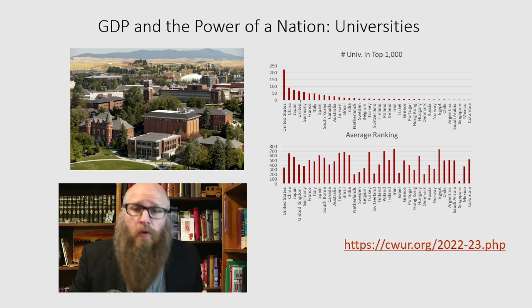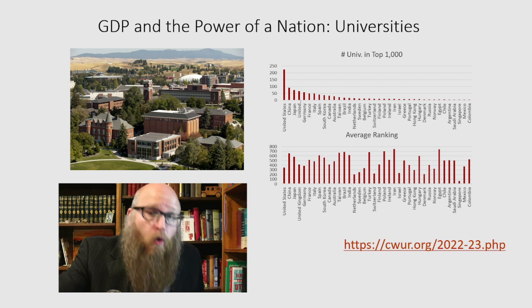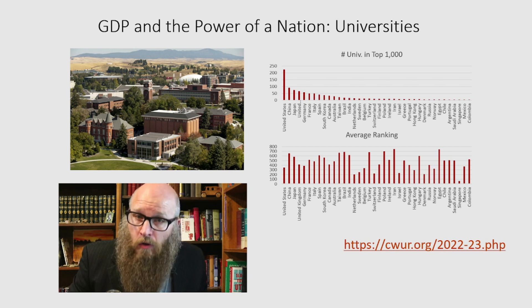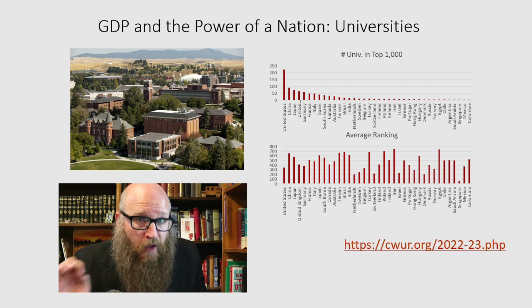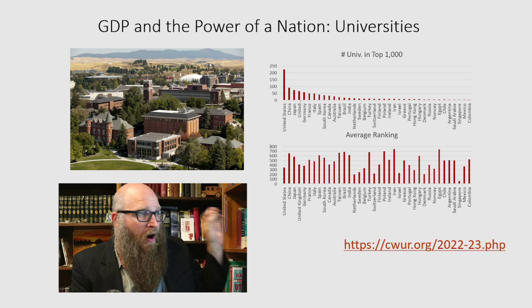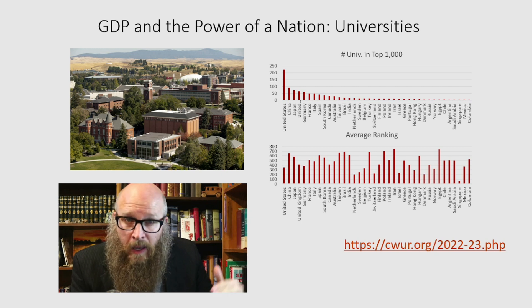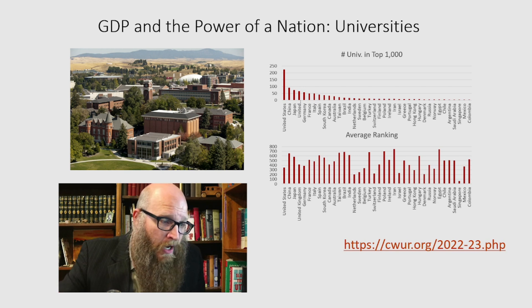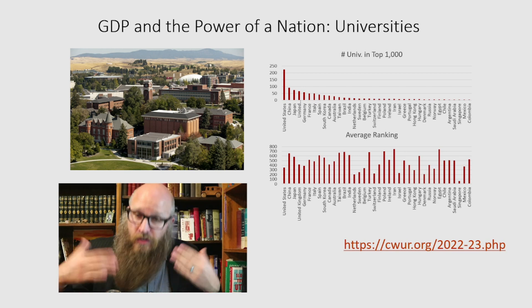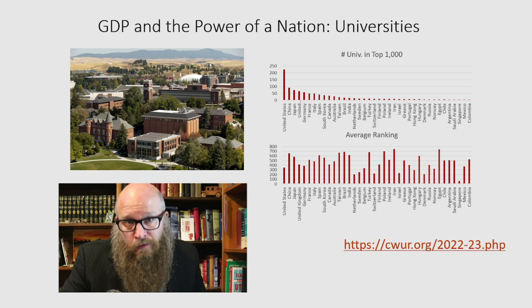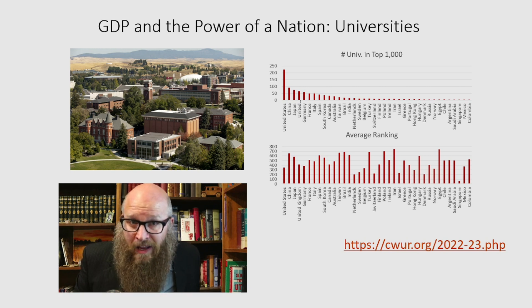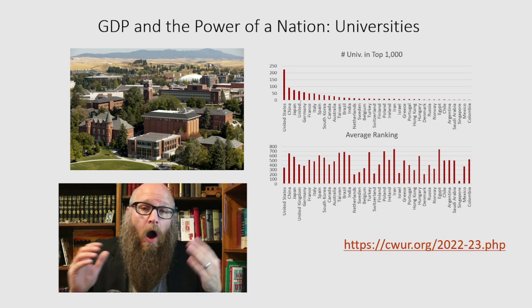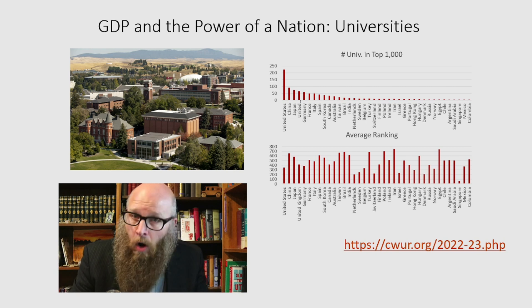Another thing GDP can get you is high-quality education. The United States has more universities ranked in the top 1,000 global schools than anybody else — and it's not just because we have a lot of them. The average ranking for U.S. universities is around 300, whereas the average ranking of Chinese universities is over 600. As China continues to grow, they will compete for more top-quality talent from around the world. If you've ever wondered why many of your professors are international, it's because American universities are attracting the best and brightest talent globally. A large GDP means that even regional state schools have the resources to compete on a global scale.